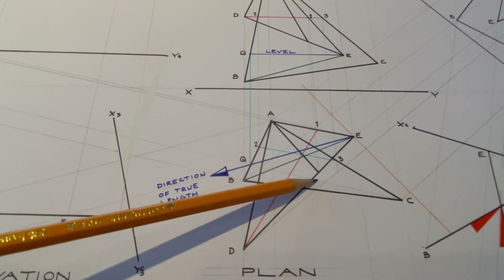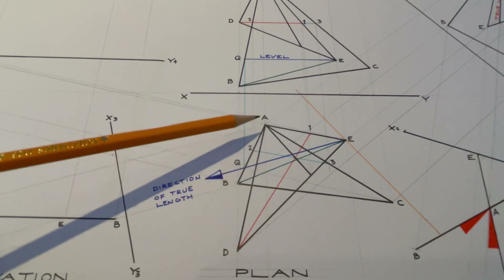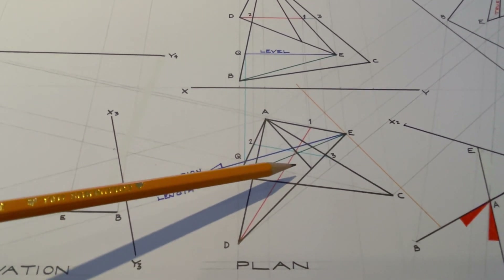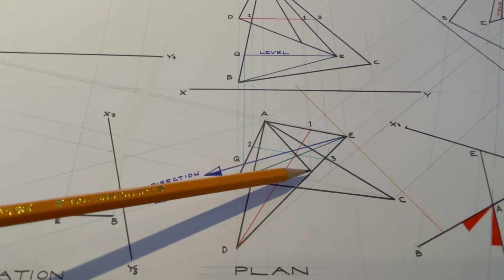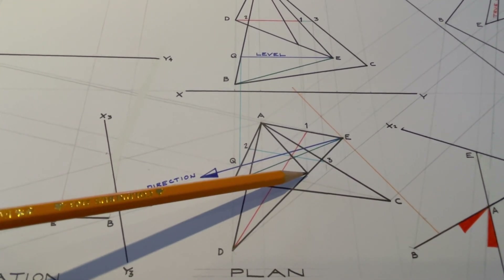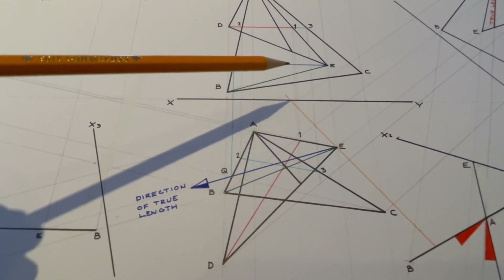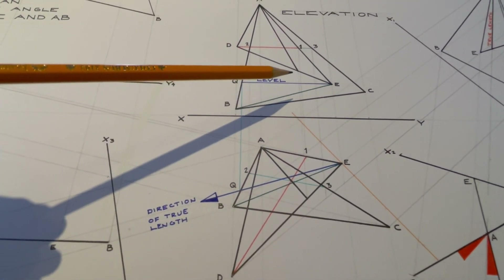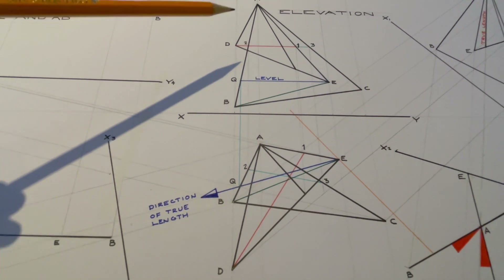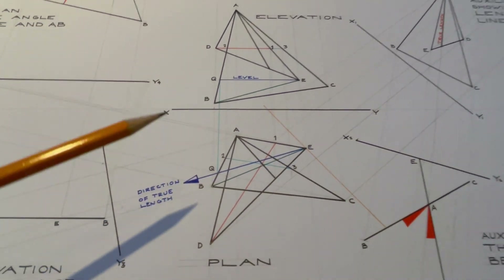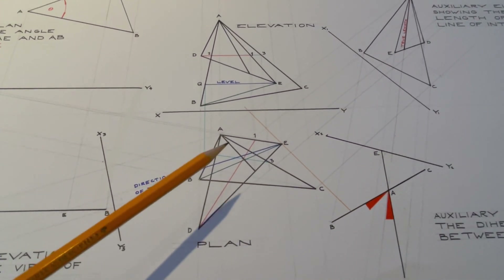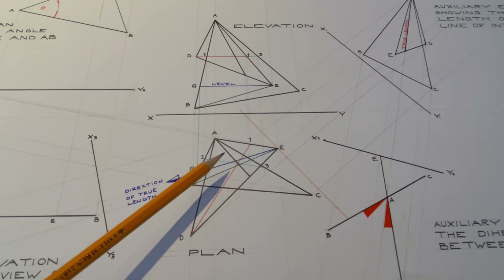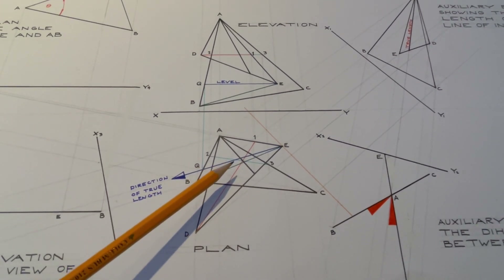Since A is already common to both planes, through the point where the two lines cross we draw the line of intersection — that is the line of intersection in plan. That line then intersects ED, which we bring up to ED in elevation and join back to A. To get the dihedral angle we need the true length of the line of intersection.